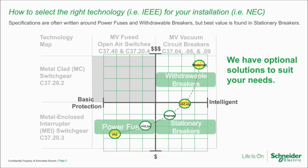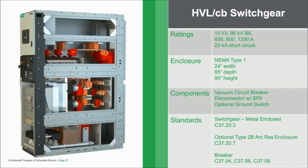Does the entire HVLCB lineup have to be de-energized prior to disconnecting a single breaker compartment? This is always a point of confusion — the answer is no. Each and every single section has its own disconnect. The main bus passes through several different feeders. In fact, we can connect HVLCB and HVLCC feeders together in a lineup, each one with its own disconnect.